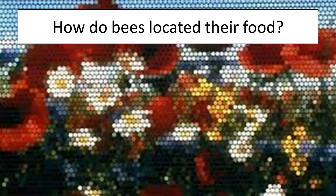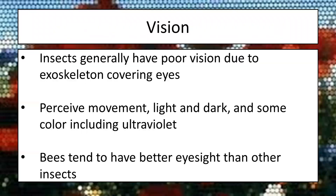Bees first need to be able to locate their food. Insects in general have really poor eyesight — they have exoskeleton covering their eyes that gets dented and scratched, making it hard to see. Their organs are really best for perceiving movement and light and dark. However, many insects have developed the ability to detect ultraviolet colors, and bees in particular have this gift. Bees also tend to have somewhat better eyesight than many other insect species because, well, flowers exist.